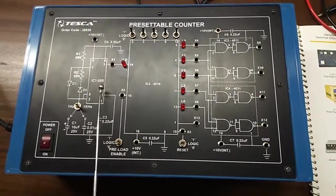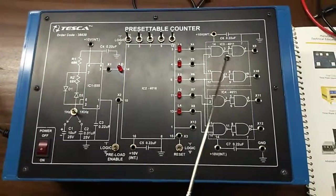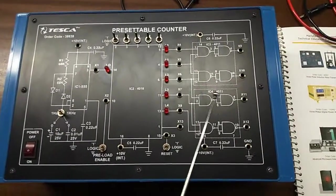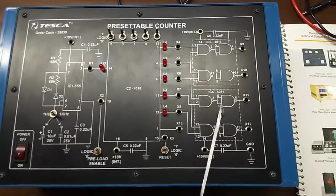This is timer IC 555, there are 2 NAND gate ICs, IC 4011 and IC 4011, these are 2 NAND gate ICs.